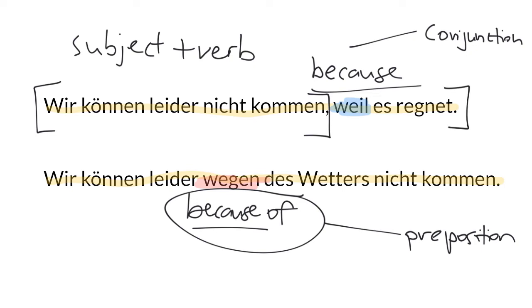And then the second clause, which is governed by weil, has the same thing. It has a subject, which is a pronoun, es, and then the verb to finish off with. So the takeaway is that because is always followed with a verb, and that's what weil also does in German.